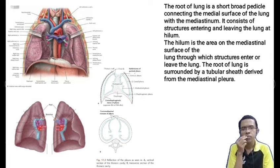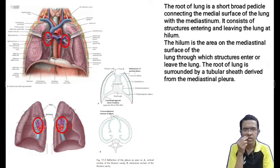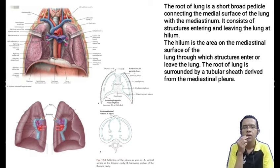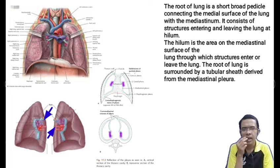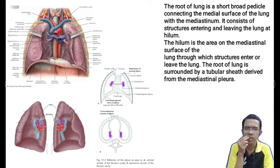The root of the lung is a short broad pedicle connecting the medial surface of the lung with the mediastinum. Each lung has a costal surface underneath the costal pleura, a medial surface underneath the mediastinal pleura, an apex, and a base. The apex lies underneath the cervical pleura and the base under the diaphragmatic pleura. The root of the lung consists of structures entering and leaving the lung at the hilum. The hilum is the area on the mediastinal surface of the lung through which structures enter or leave. The root of the lung is surrounded by a tubular sheath derived from the mediastinal pleura.